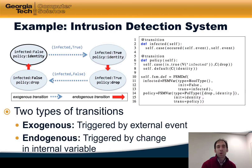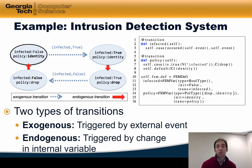Here's an example of a simple Kinetic policy that takes input from an intrusion detection system that simply indicates whether a host is infected or not. There are two types of transitions in Kinetic: an exogenous transition that's triggered by an external event, which might be a JSON message from an intrusion detection system, and an endogenous transition that's triggered by a change in an internal variable. In our FSM definition, we define an internal variable called 'infected'. That internal variable is a boolean with an initial value of false. A transition on that variable results in an update to the value of the infected variable — updating it to true or false depending on the message passed as an external event.